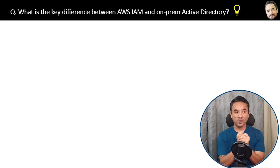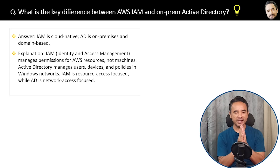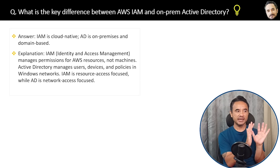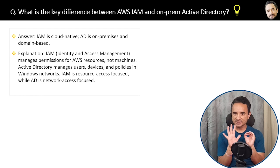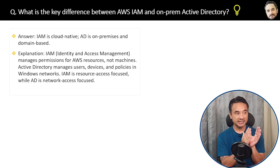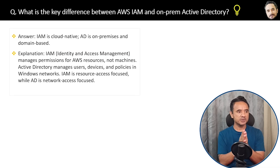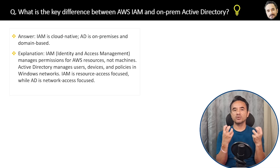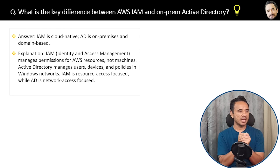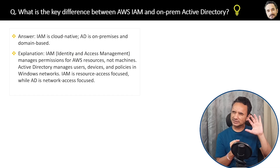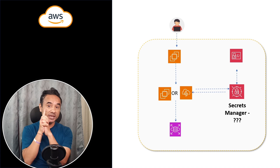What is the key difference between AWS IAM and on-premises Active Directory? IAM is cloud-native — it is for the cloud. Active Directory (AD) is on-premises and domain-based, not on the cloud. IAM manages permissions for AWS resources, not machines. Active Directory manages users, devices, and policies in Windows networks. IAM is resource-access focused, while AD is network and folder access focused. Essentially, Active Directory stores employee information on Windows, and IAM does the same thing but on the cloud.